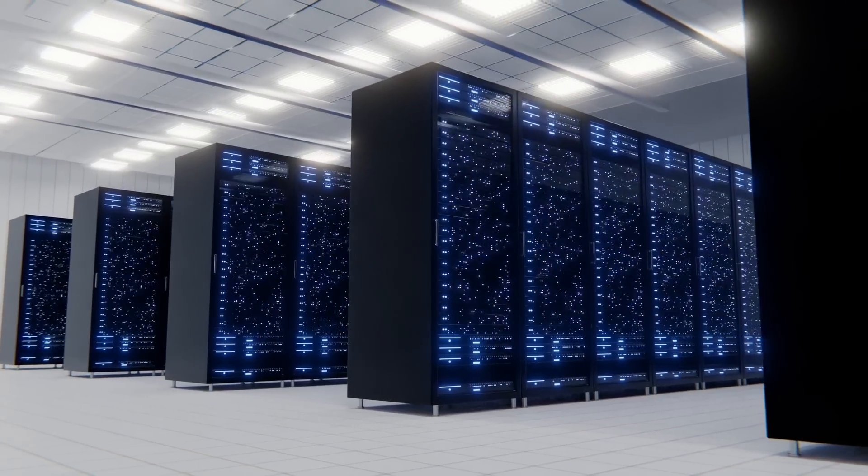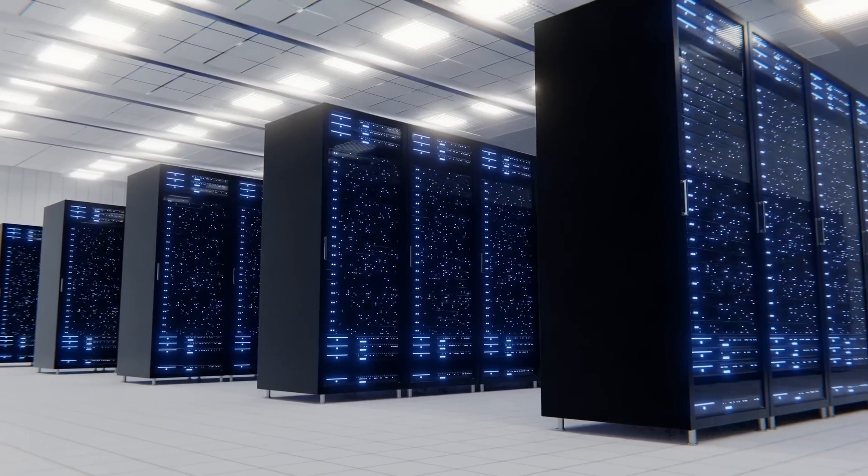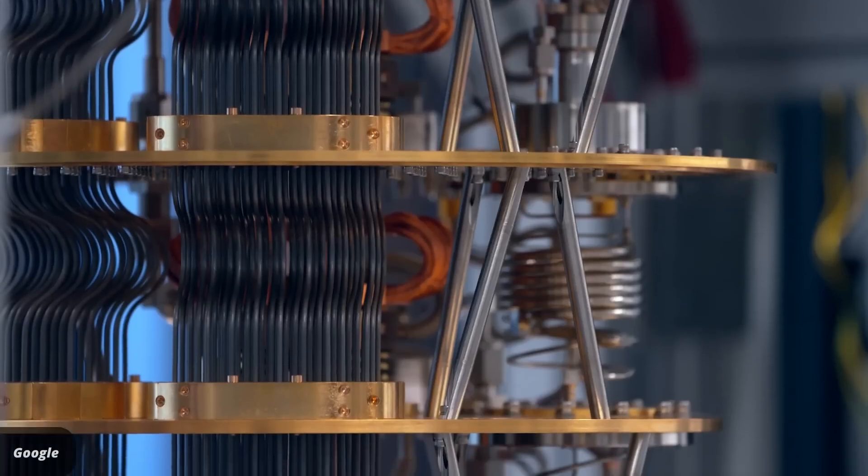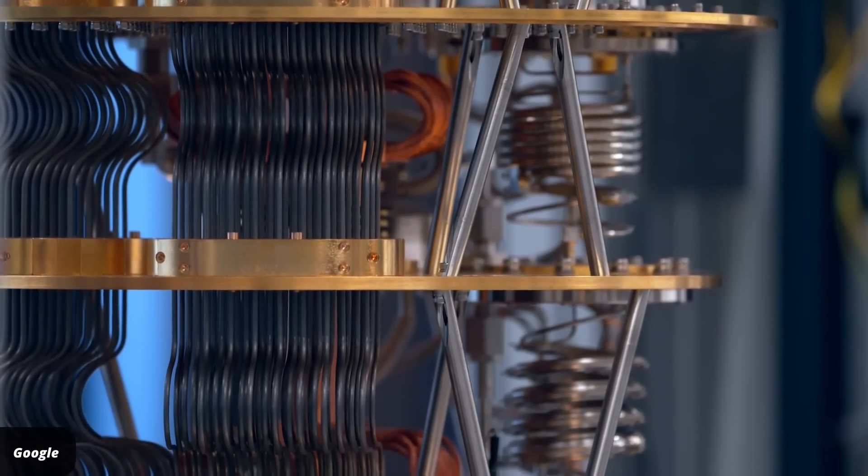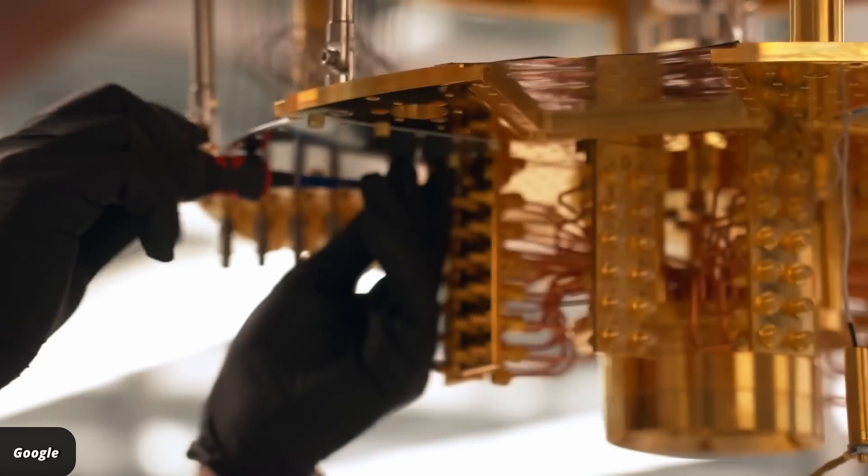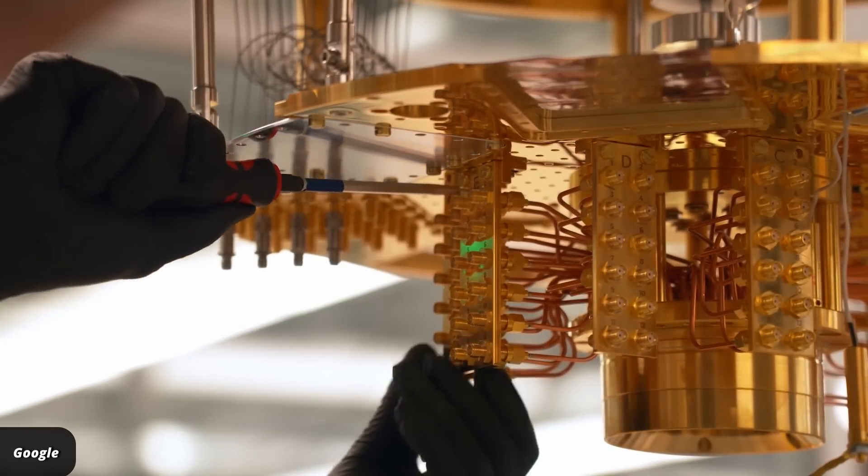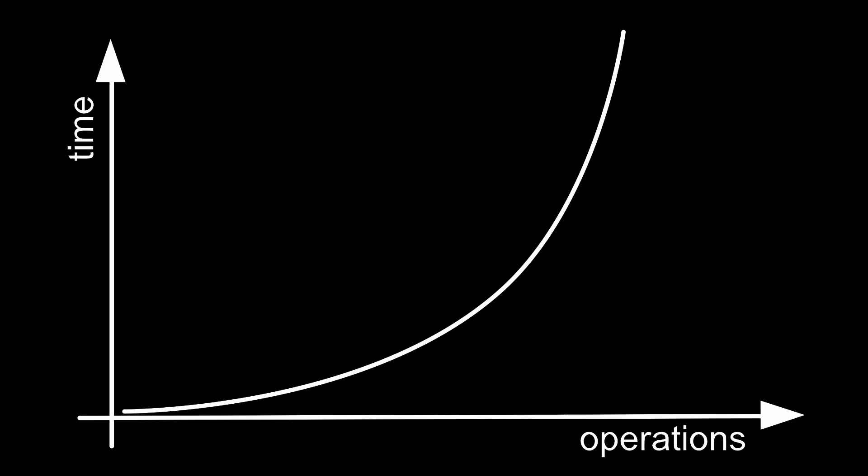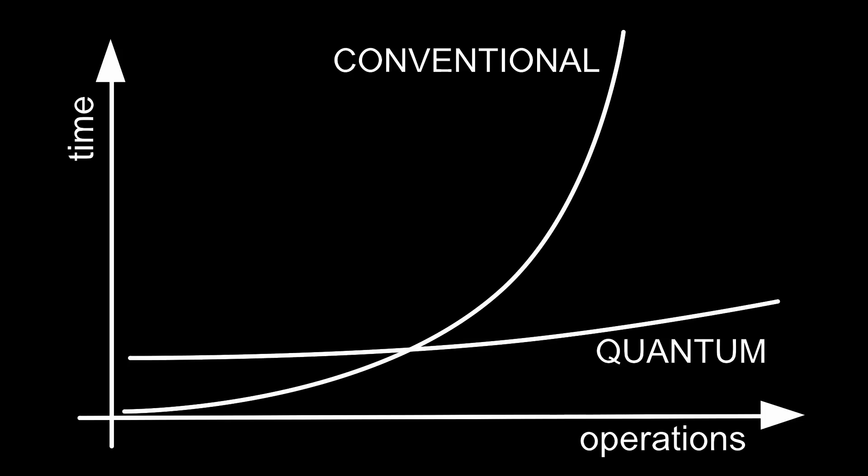Supercomputer clusters now work in the exaflop range. That's 10 to the 18 operations per second. A quantum computer like Google Sycamore in the best case would manage something like 10 million operations per second if it remained coherent for that long, which it doesn't. This figure summarizes the situation. Quantum computers have an advantage for some problems because they don't slow down as much with the size of the problem. But they have a huge starting disadvantage because they're so slow. They should catch up eventually, but just exactly when depends on how much conventional computers and the algorithms on them improve.